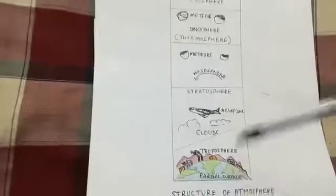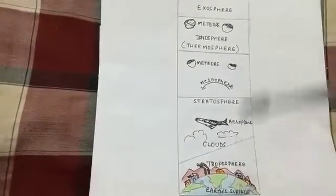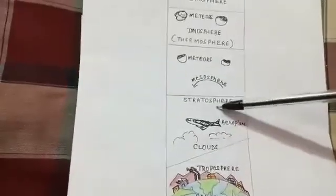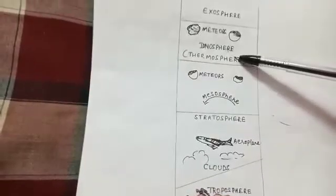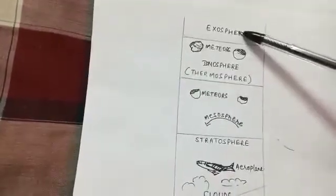Now I will explain the structure of atmosphere. As you can see in this diagram there are five layers of atmosphere: troposphere, stratosphere, mesosphere, thermosphere or ionosphere, and exosphere.